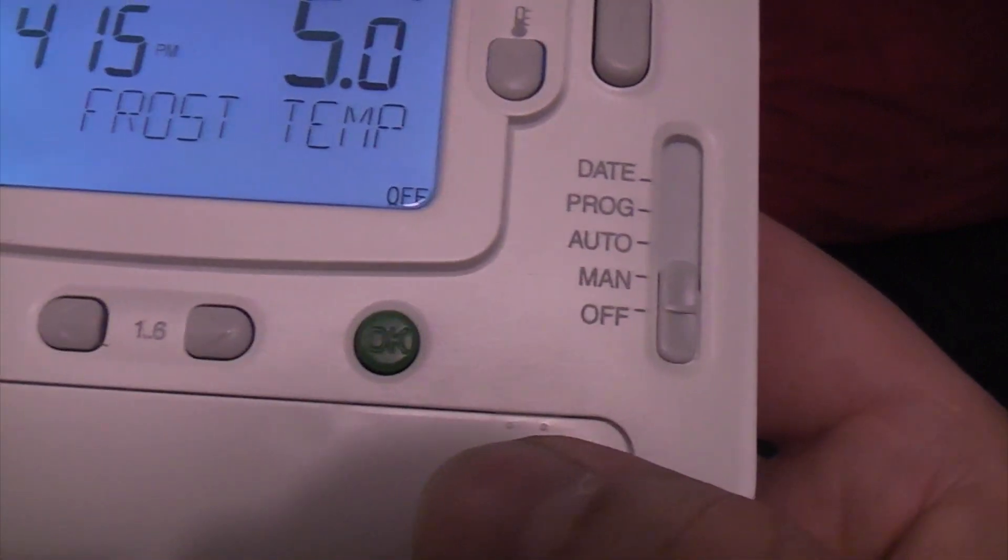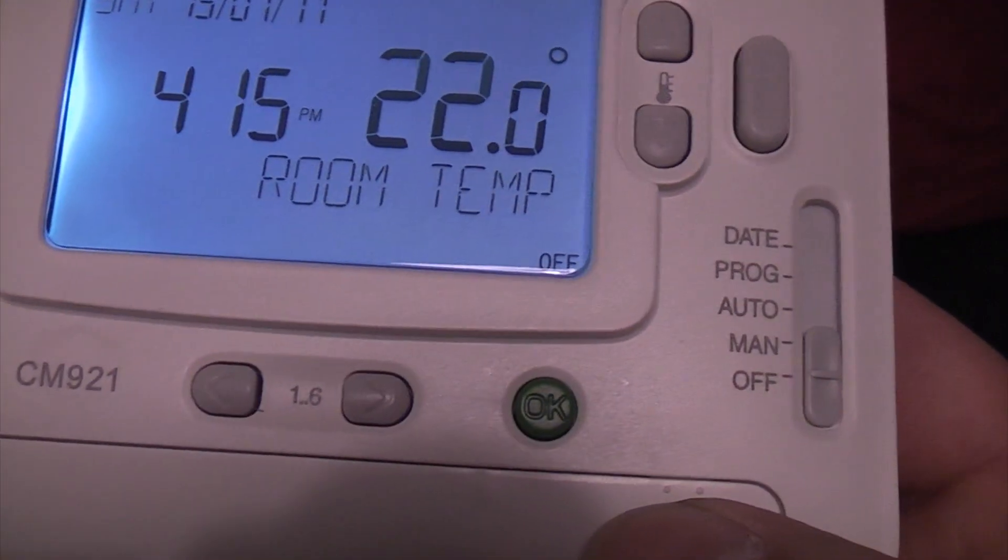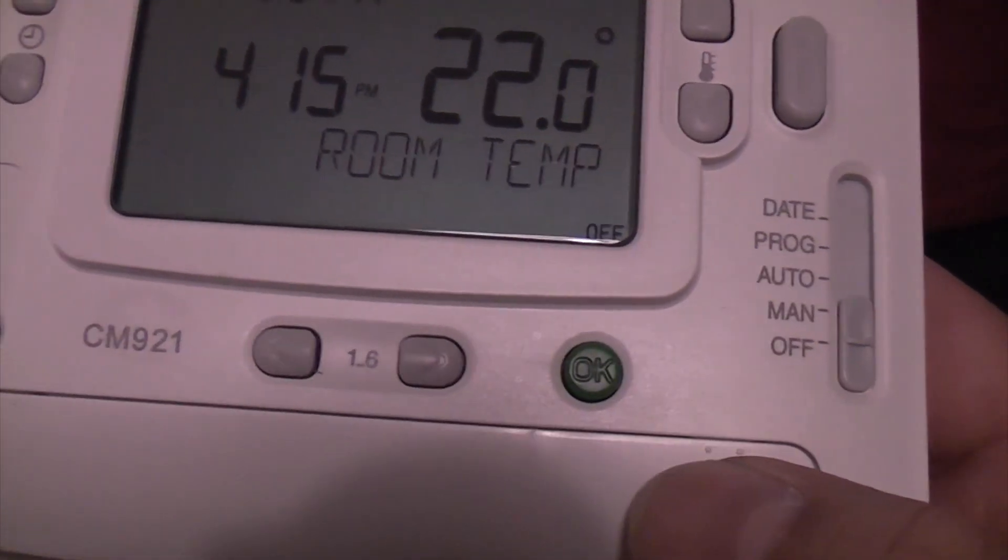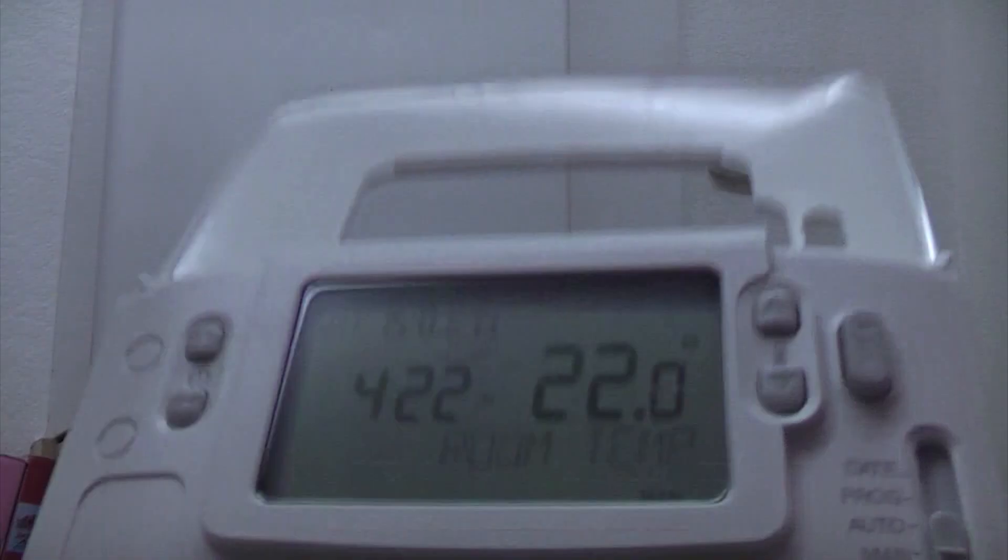And then I've now switched it to the off position. So I'm just going to go back to the boiler and check that the green flashing light has gone off. So we can now check that it's working correctly.